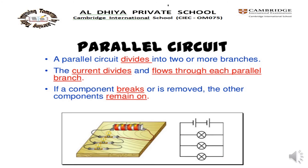This is a parallel circuit. A parallel circuit divides into two or more branches. The current divides and flows through each parallel branch. If a component breaks or is removed, the other components remain on.